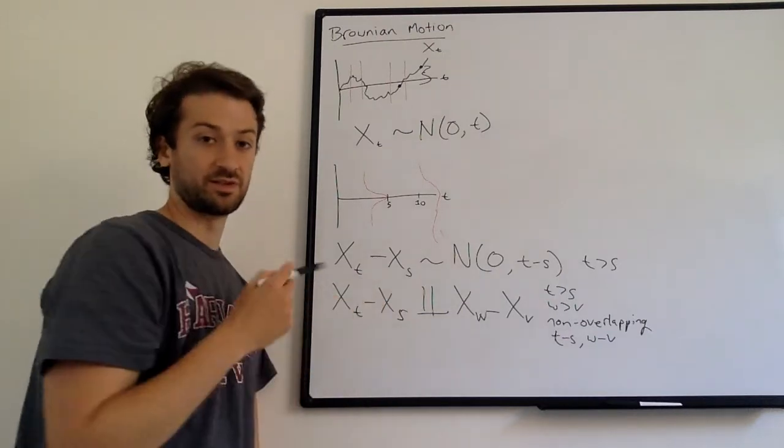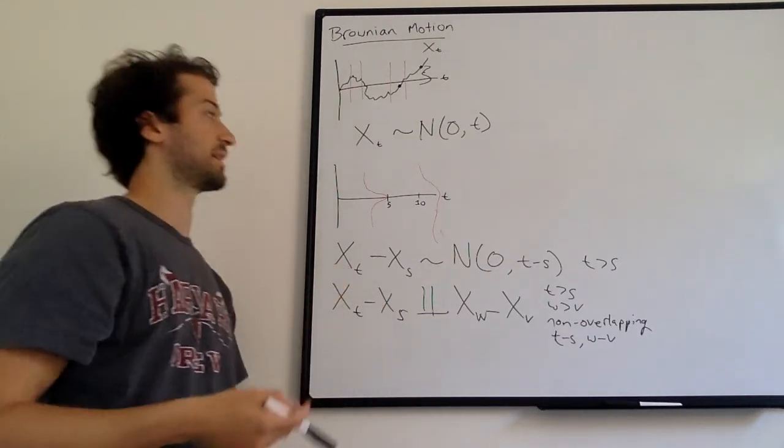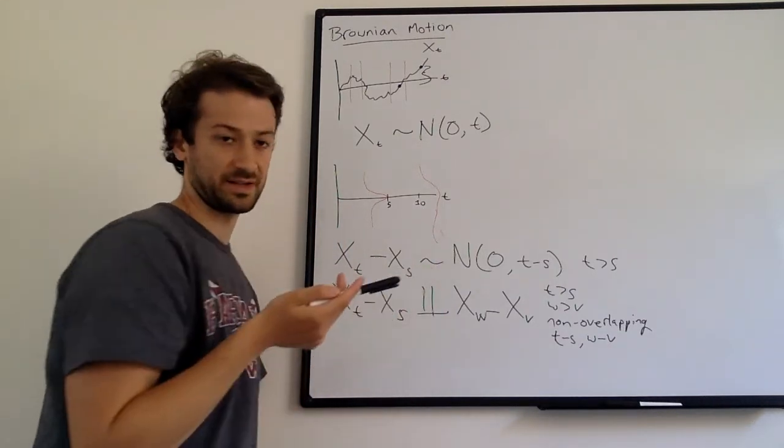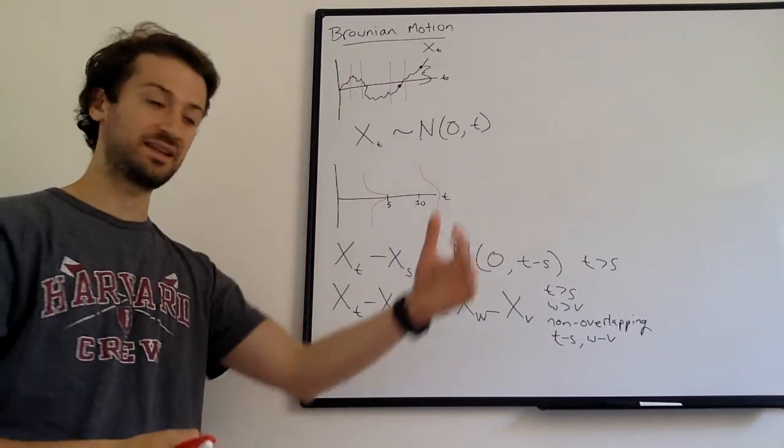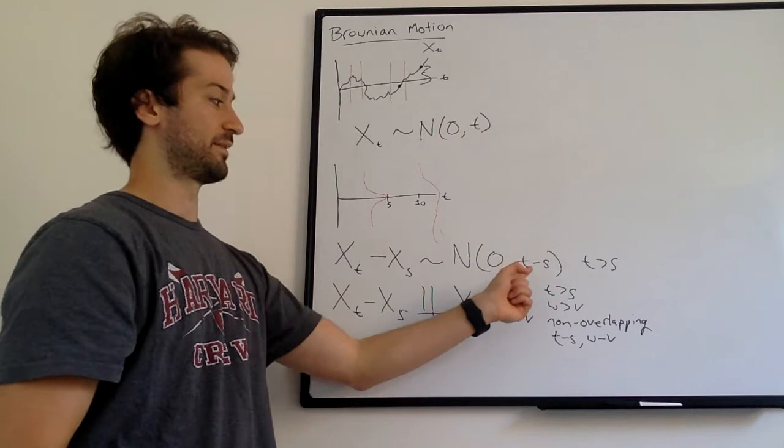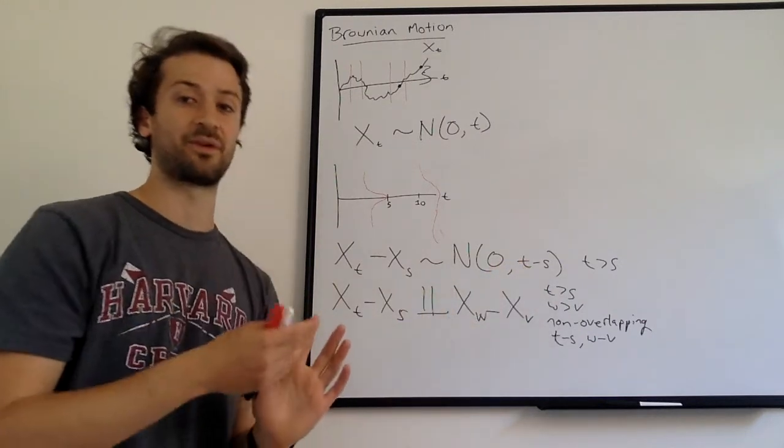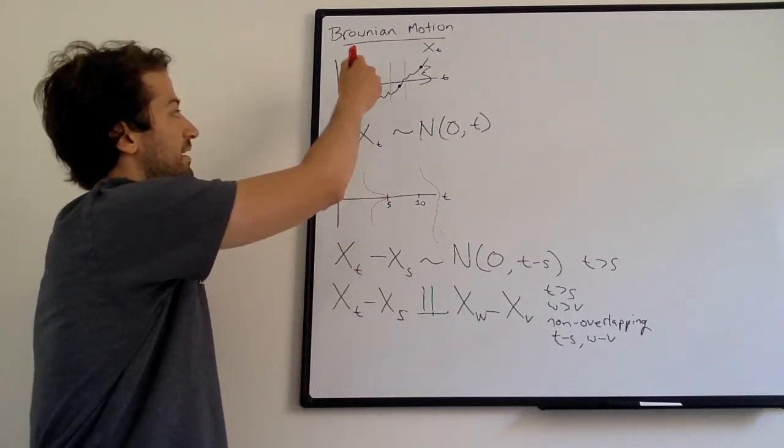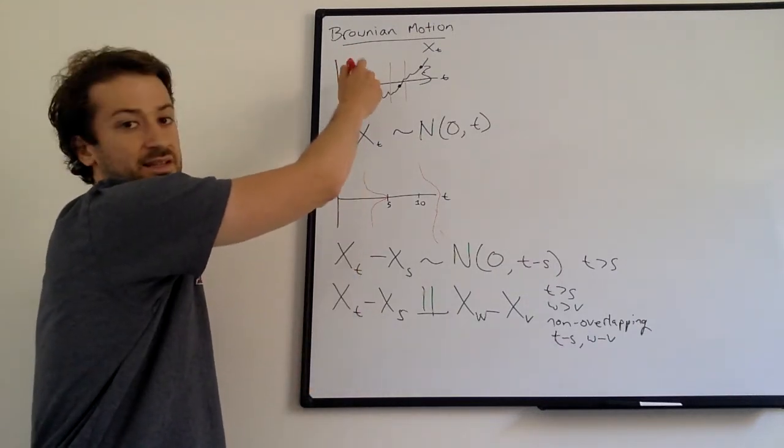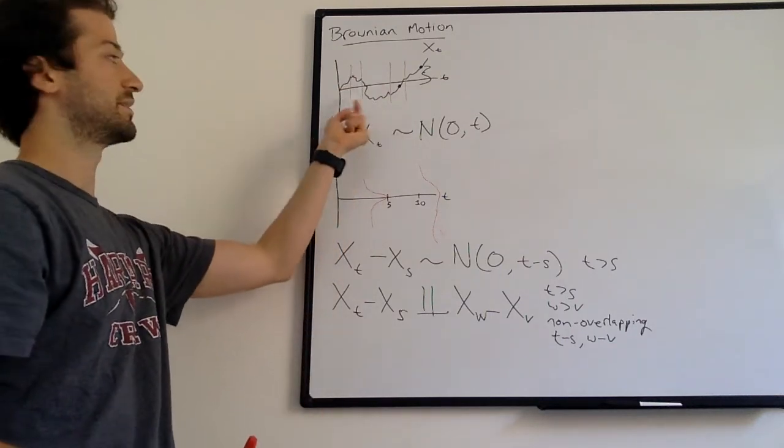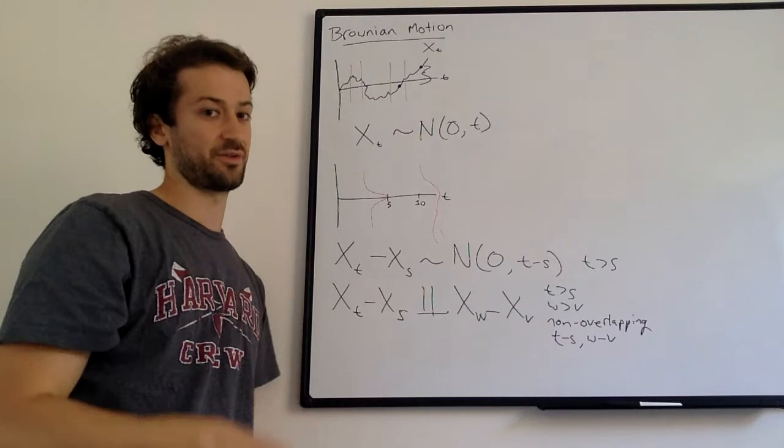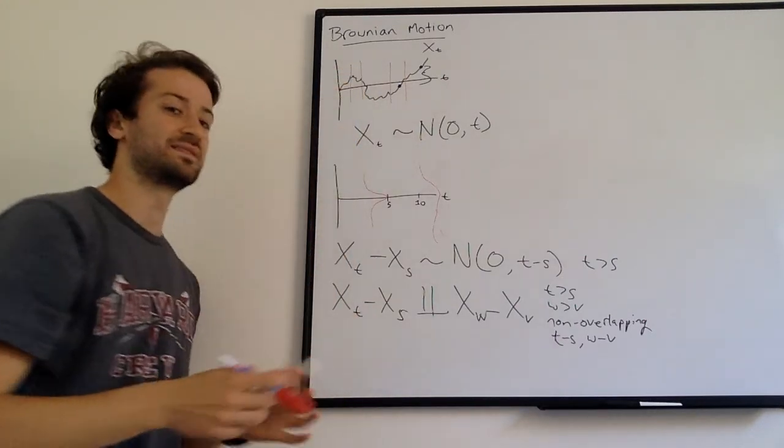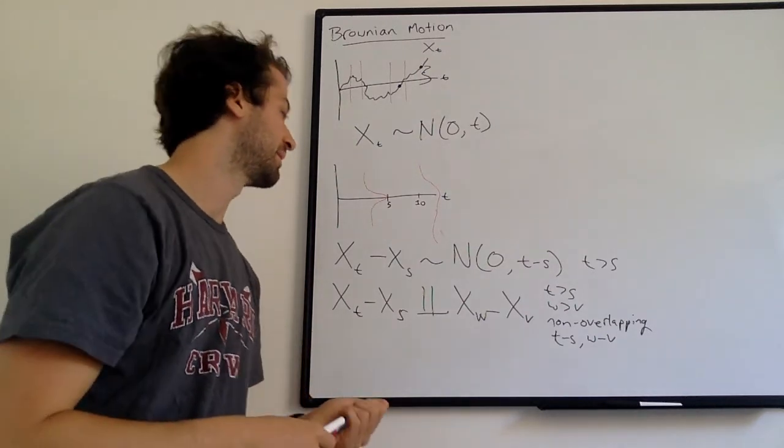We know that the increments are still normally distributed. And even if the increment starts in negative territory or starts in positive territory, the change between s and t is still normally distributed with mean of zero. And the variance is just the time that elapses from time s to time t, which is t minus s. And finally, we see this independent increment thing. So here's t and s and here's w and v. These are independent increments as long as they're not overlapping. You know, if I said there was an increment like that mostly overlapped, obviously knowing about one of the increments, we get information about the other one.